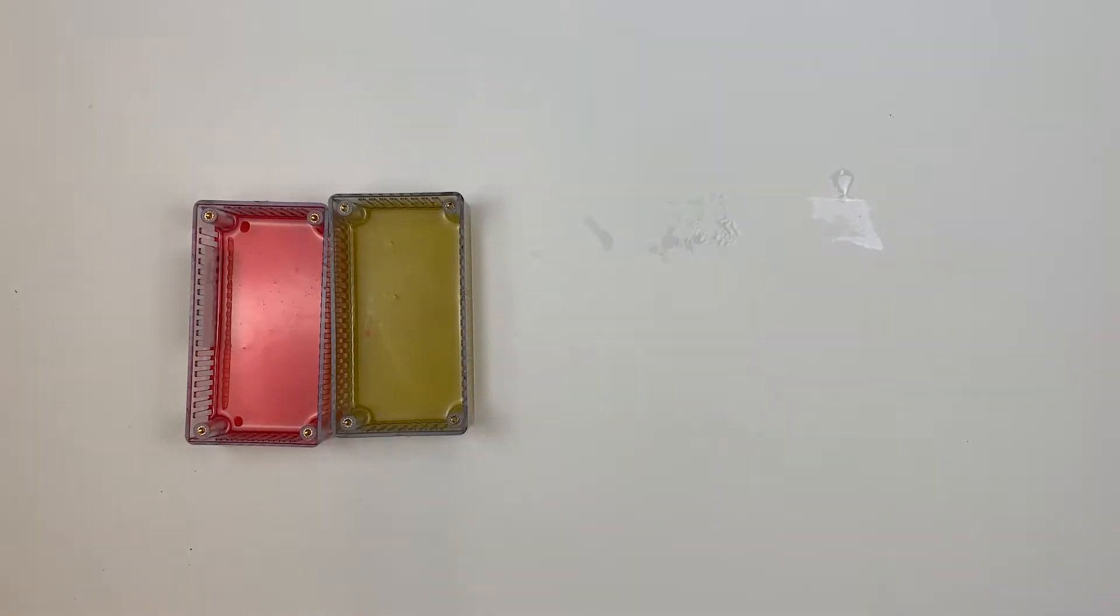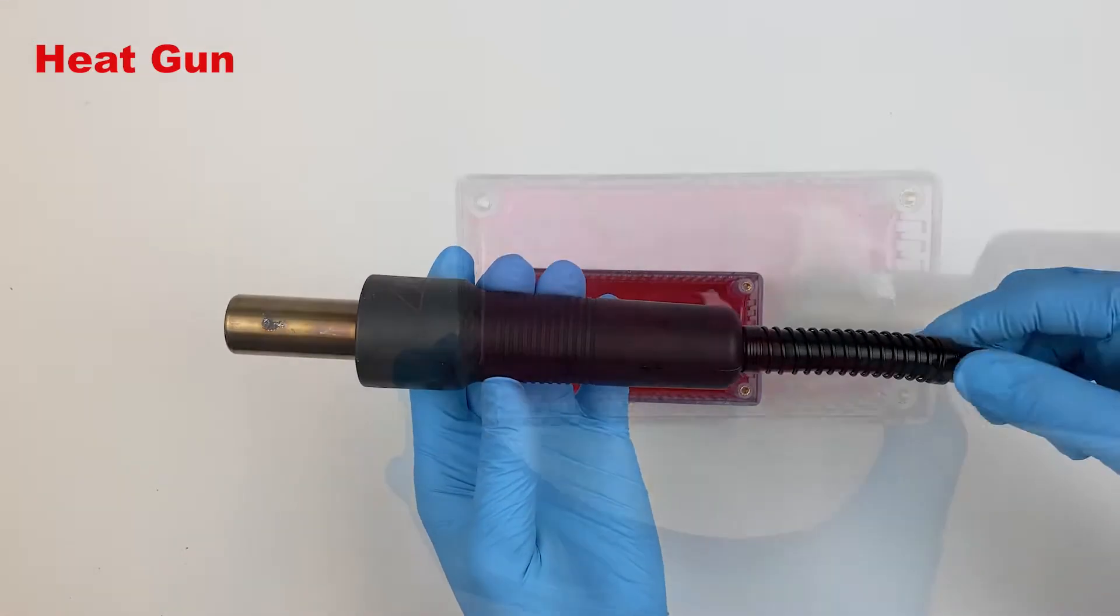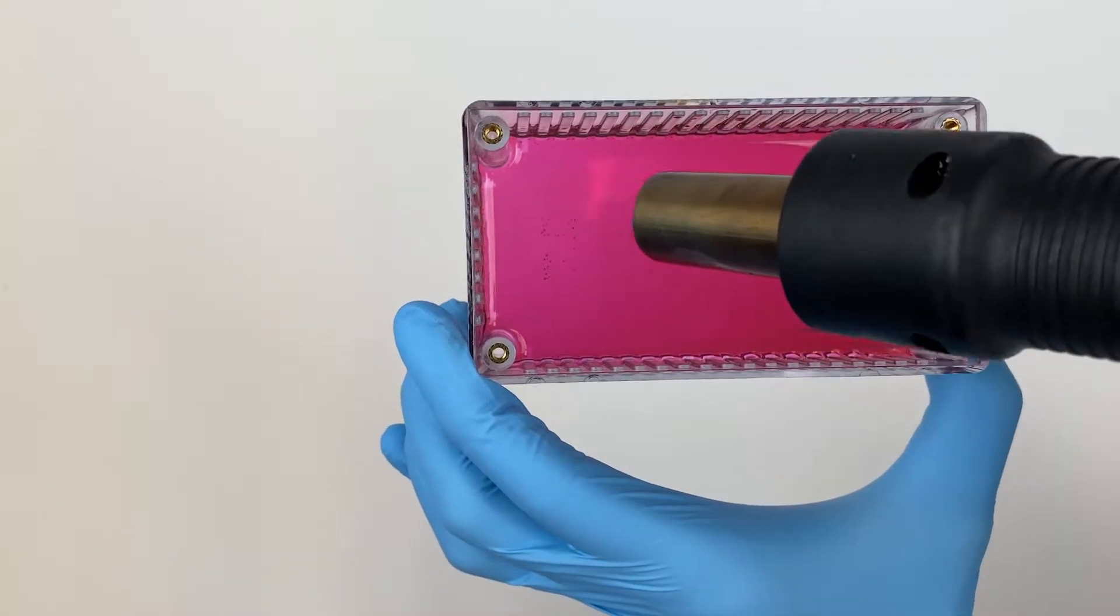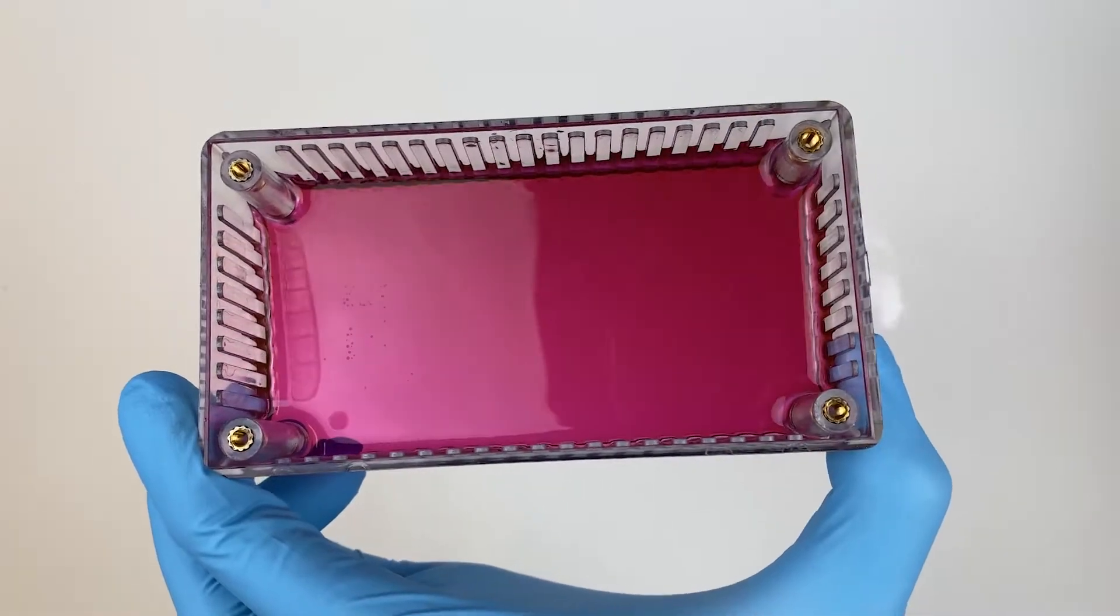Next we have a heat gun which is the same concept just using a different tool. The advantage over using a flame is that you are less likely to char with a heat gun, but you must be careful not to accidentally blow dust into the mixture.